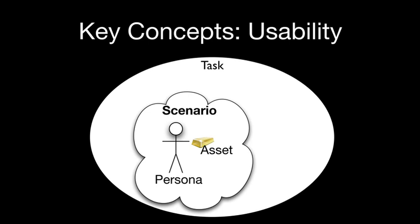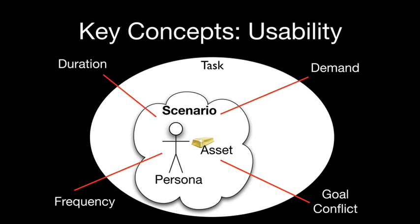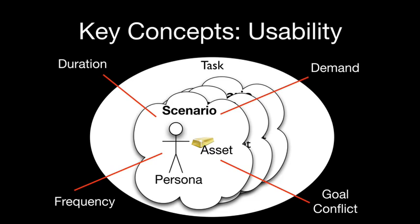Now let me talk about some of the key usability concepts in Kairos. We have tasks — activities that people need to achieve a goal — and personas, which are specifications of archetypical users. Tasks describe environment-specific scenarios where personas carry out work that might entail using assets. When we specify these scenarios, they may have a duration, frequency, some indication of how demanding the persona finds it, and some indication of where persona goals conflict with system goals. These map to ISO 9241 usability goals.